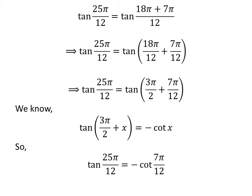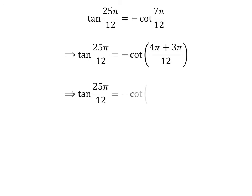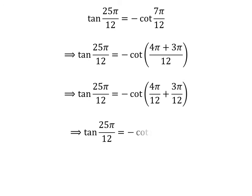So, tangent of 25 times pi upon 12 is equal to minus cotangent of 7 times pi upon 12. Following the above steps, we get tangent of 25 times pi upon 12 is equal to minus cotangent of pi upon 3 plus pi upon 4.